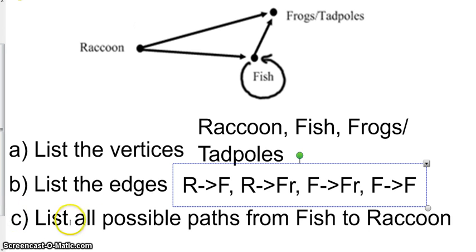Now the last one lists all possible paths from fish to raccoon. So we've got to think about it. Is there a way we can get from fish to raccoons? So from fish, I know I can take this one right here and come back to fish, but that doesn't really accomplish much. From fish, I can go to frogs. But once I get to frogs, there are no arrows leading away from it. So technically, there are no possible paths to get from fish to raccoons.